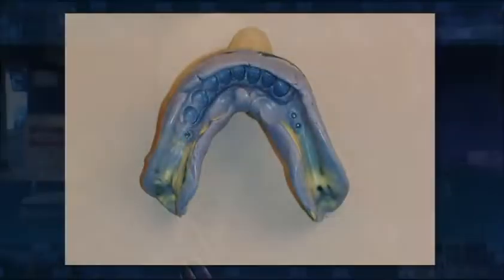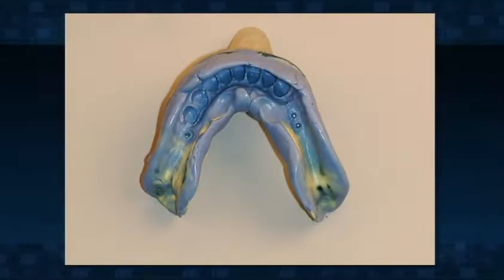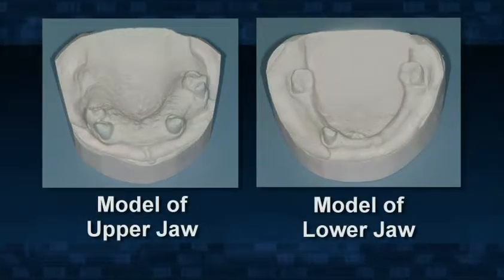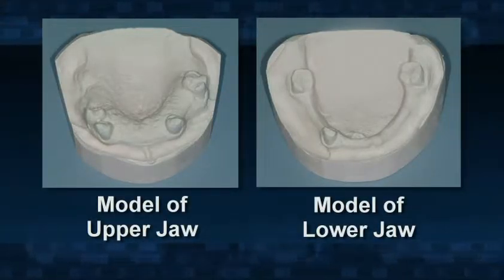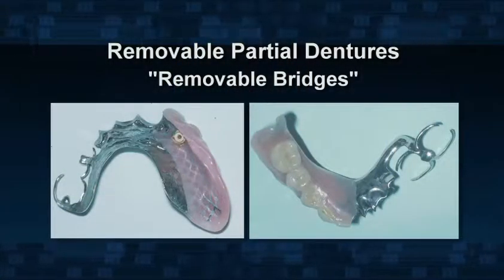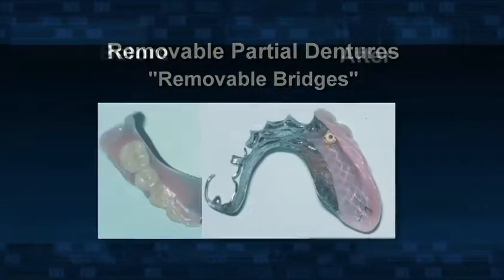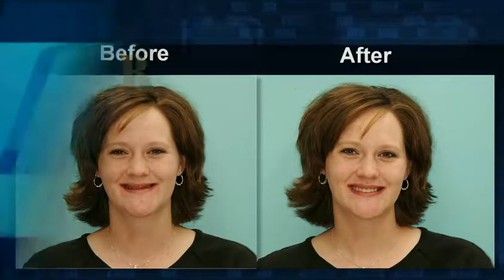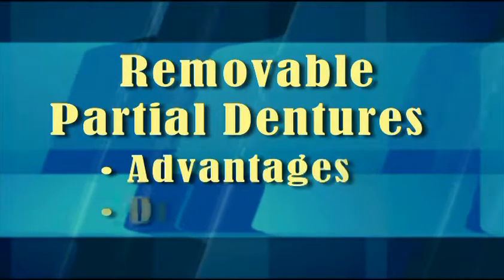To make a partial denture, an impression is made of your affected jaw and remaining teeth. Models are made of both jaws, and the new bite and appearance are determined by the dentist. Usually, but not always, a metal framework is made to support the plastic gums and teeth — though sometimes a partial denture can be all plastic. The new removable partial denture provides chewing efficiency and a noticeable improvement in appearance.